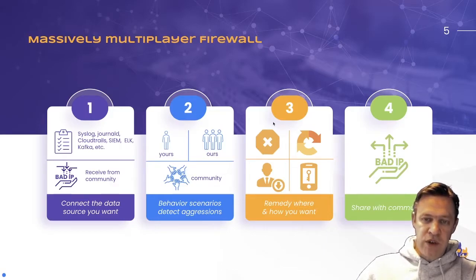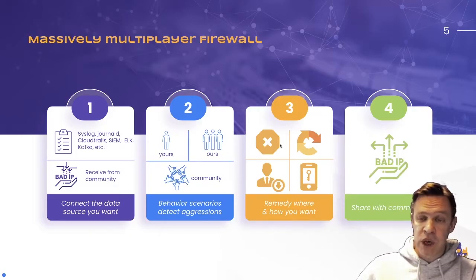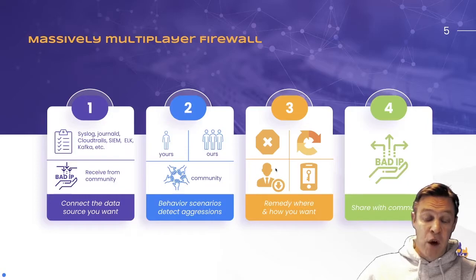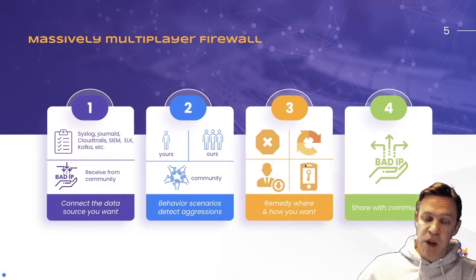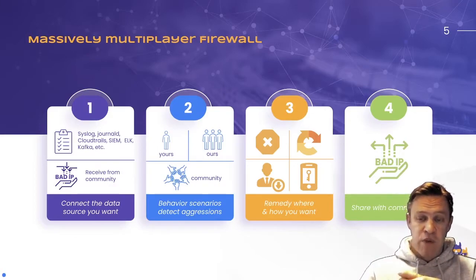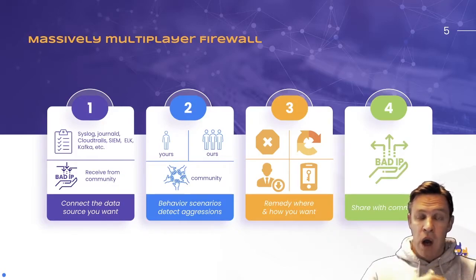Once you've found something with your scenarios that you don't want — a behavior you don't want to see — you can, for example, drop it on your reverse proxy, on your firewall, everywhere it makes sense. Or if you're working in an HTTP layer, you can send a CAPTCHA. If you want to deal directly with the user session, you can forbid some access or URLs, lower the rate, lower the speed, or trigger multi-factor authentication — whatever you want. The remedy depends on your business and your stakes. You can also wire the information into a script or into your Slack channel with your DevOps or SecOps.